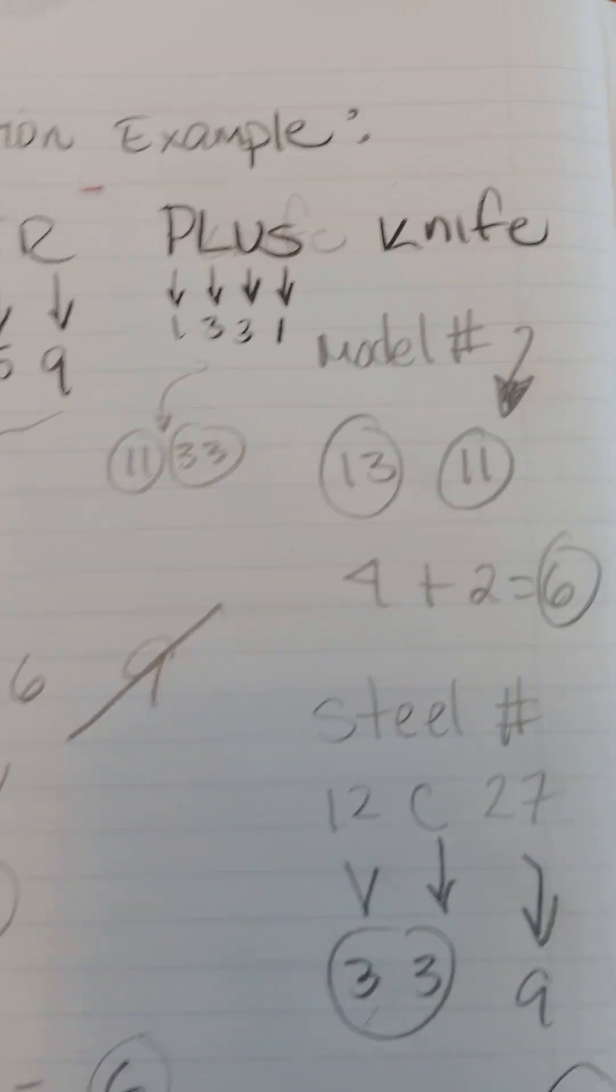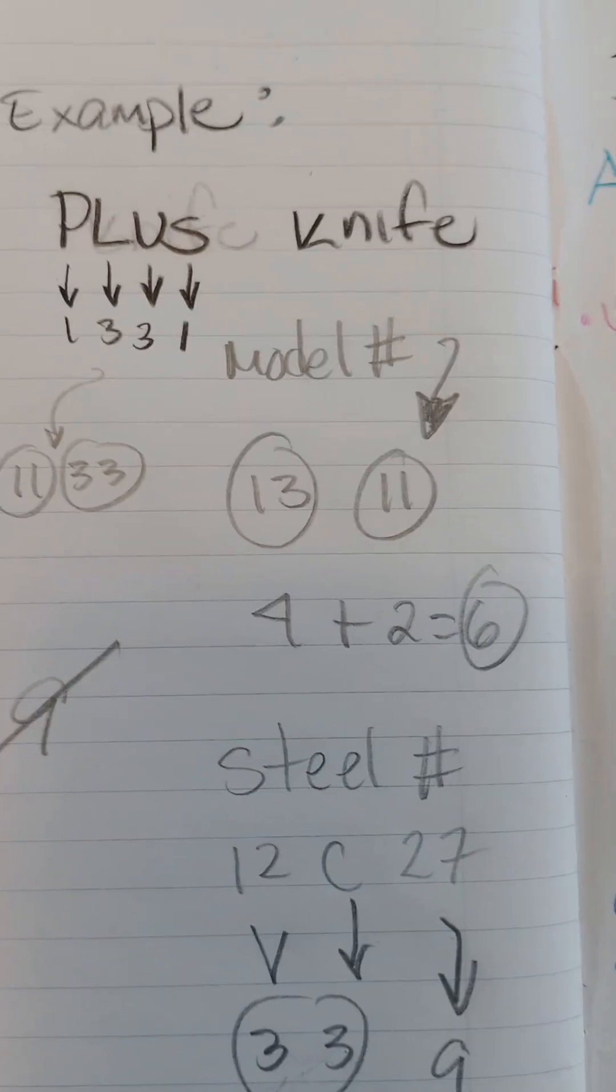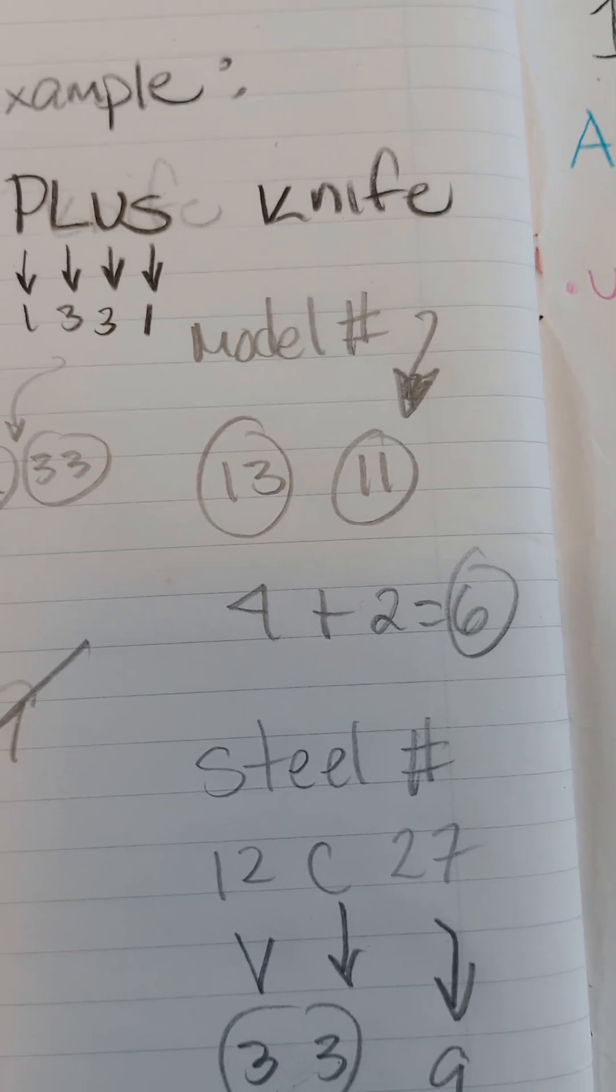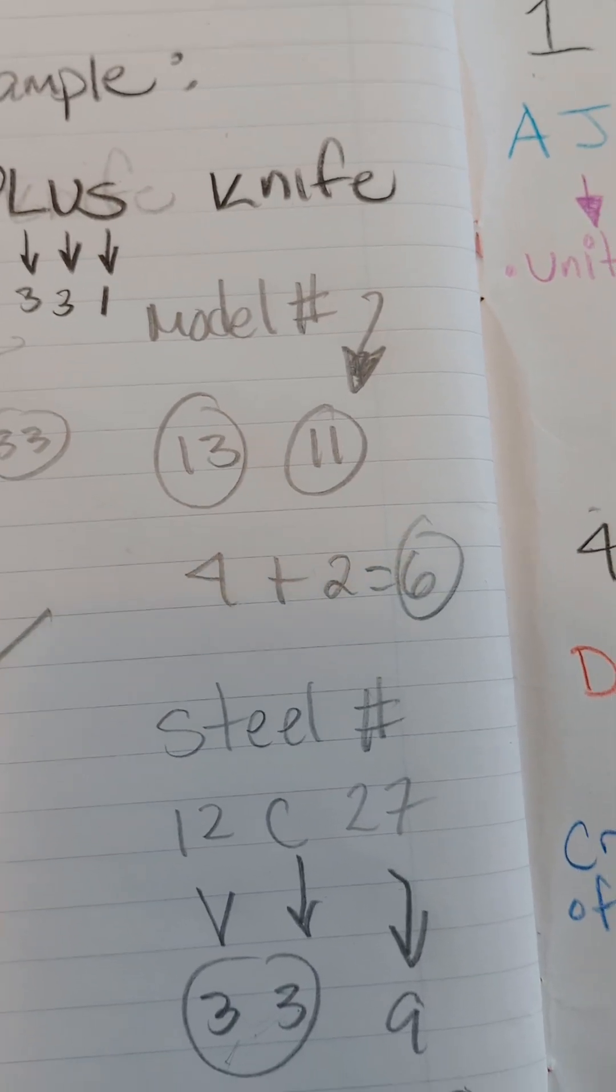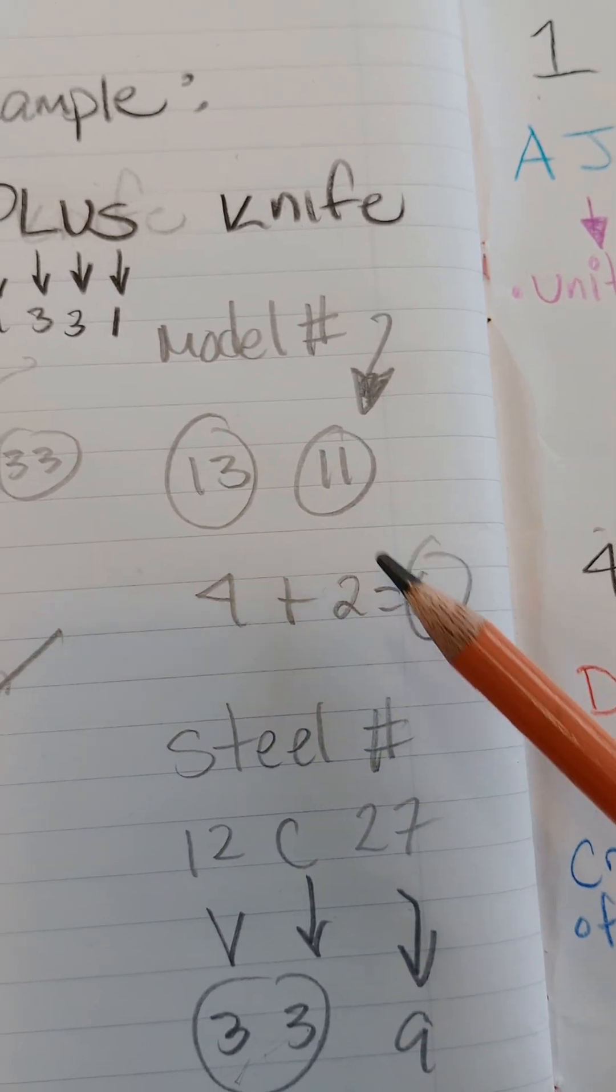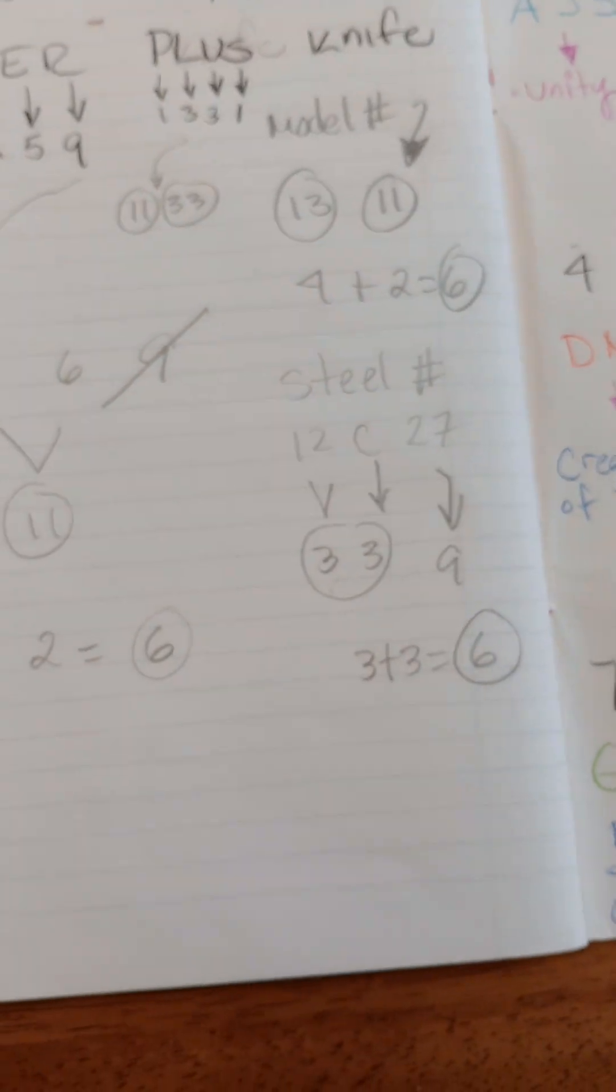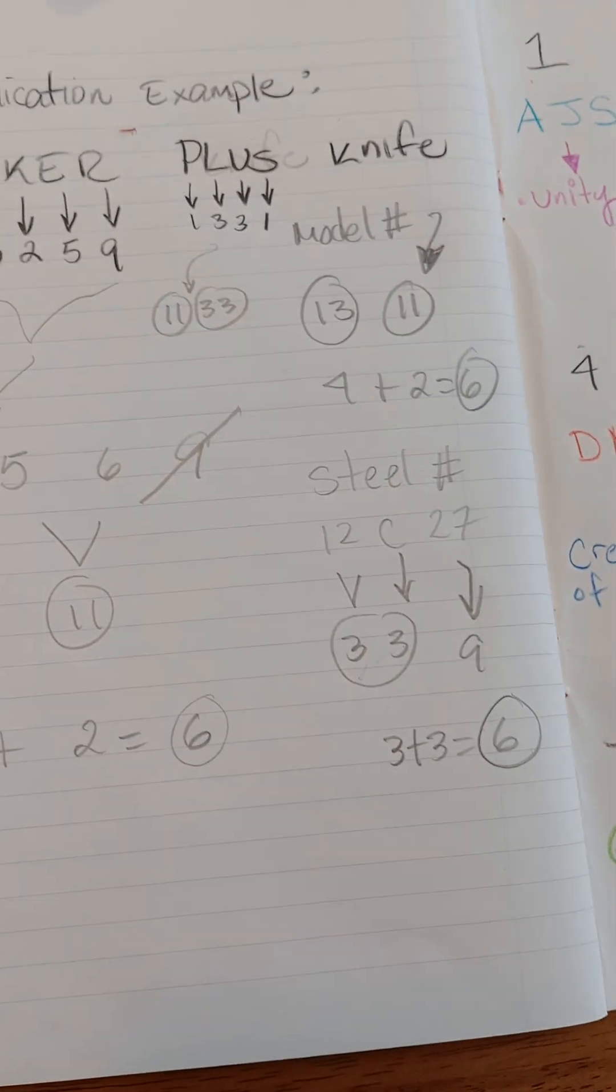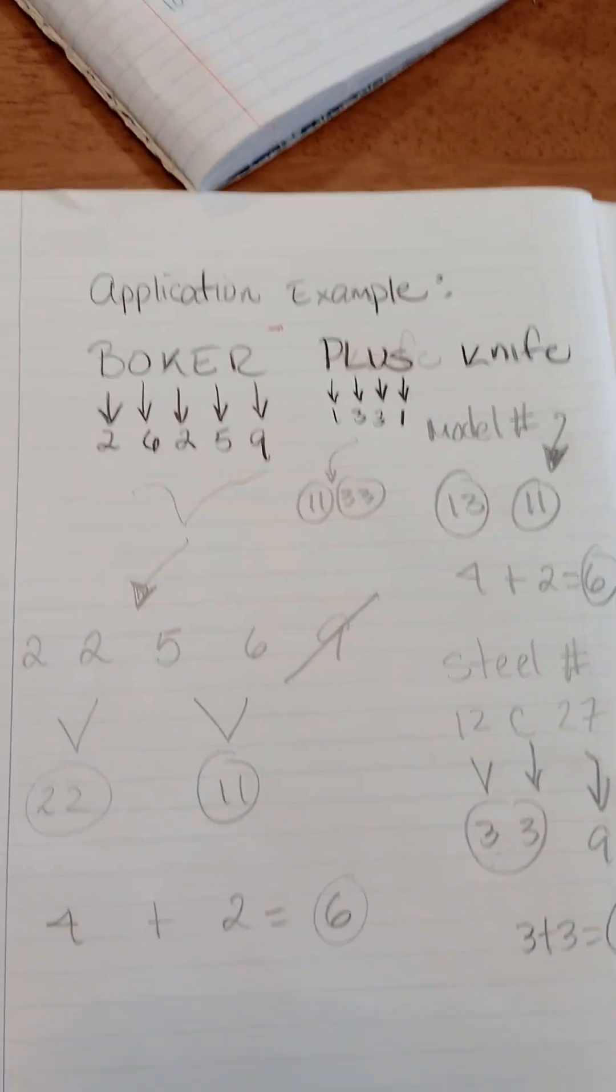Now let's go with the model number, 1311. 13, an occult pagan number for rebellion, right? That number there, 1 and 3 adds up to 4. The 11 adds up to 2. That's another 6. So we have three 6s already into that knife.